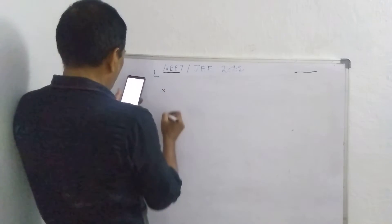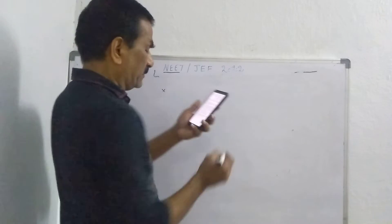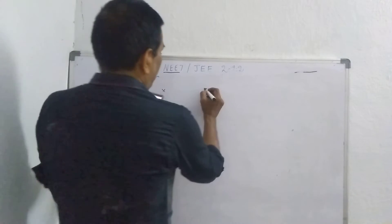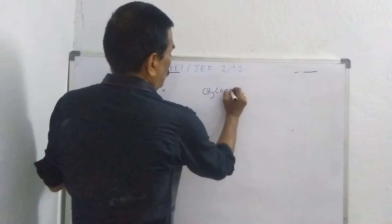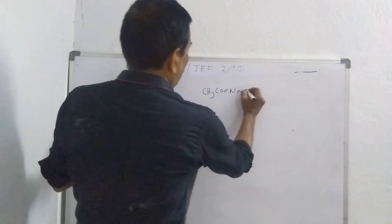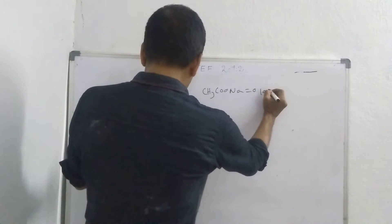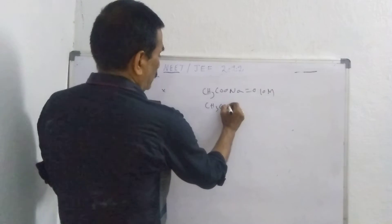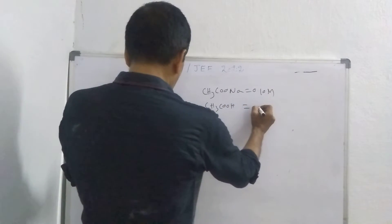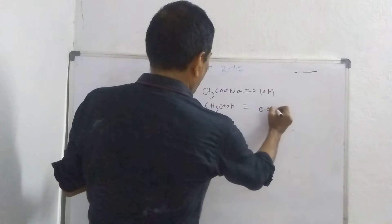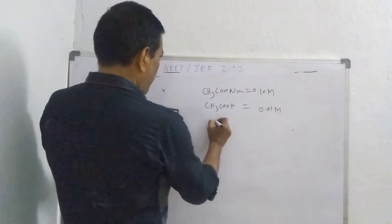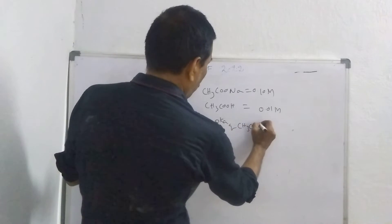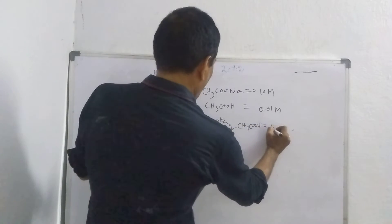Another question is, the pH of the solution containing 50 ml each of 0.10 M sodium acetate CH3COONa and 0.10 M sodium acetate concentration. At the same time, acetic acid CH3COOH, acetic acid is 0.01 M. PKa of acetic acid, a very simple question, 4.57.